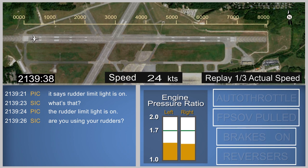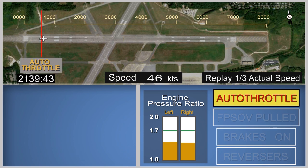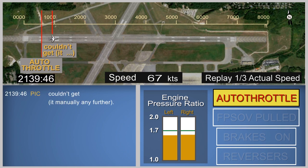This setting was substantially less than the normal target engine pressure ratio of 1.7 typically used by the pilots. The autothrottles were engaged and engine pressure ratios began to increase towards their maximum attained value of about 1.6, before reducing to about 1.5. As the engine pressure ratios reduced, the pilot in command commented "couldn't get it manually any further," which suggests that he was aware of the restriction in the throttle lever movement.